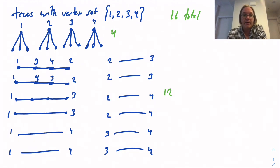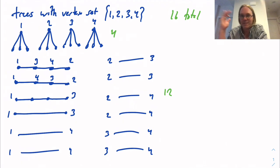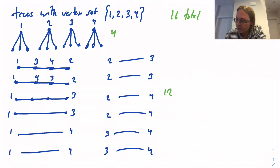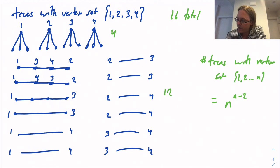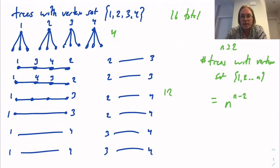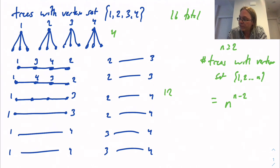Our big theorem here is that the number of trees with vertex set {1, 2, ..., n} is always equal to n raised to the power n minus 2. This is for n greater than or equal to 2. You can see that aligns with our calculation: we had {1, 2, 3, 4}, so the number should be 4 squared, which is indeed 16.